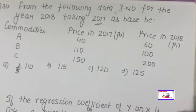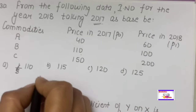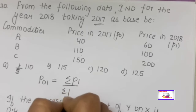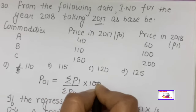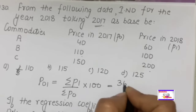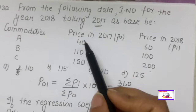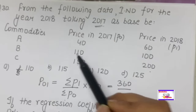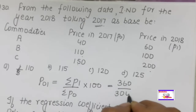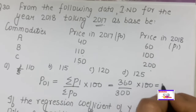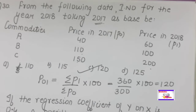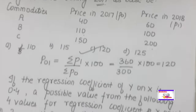From the given data, calculate the index number taking 2017 as base year, using the simple aggregative method. Price index = (ΣP₁/ΣP₀) × 100. ΣP₁ = 360 (given values), ΣP₀ = 190. But the calculation gives ΣP₁/ΣP₀ × 100 = (360/300) × 100 = 120. The answer is 120.